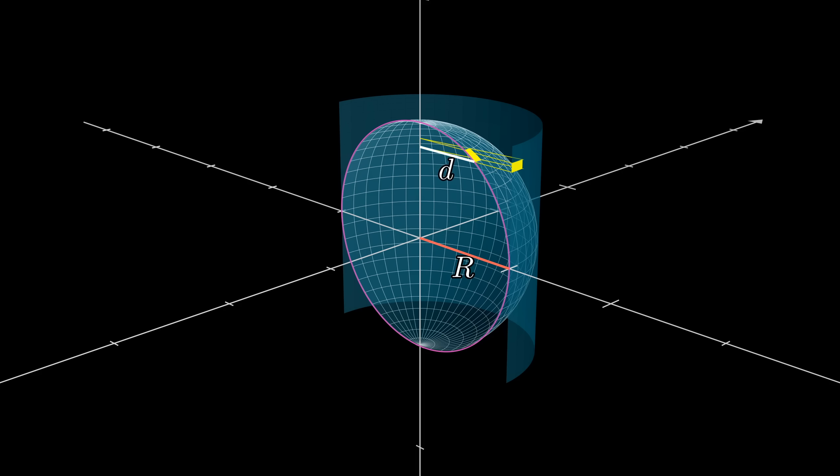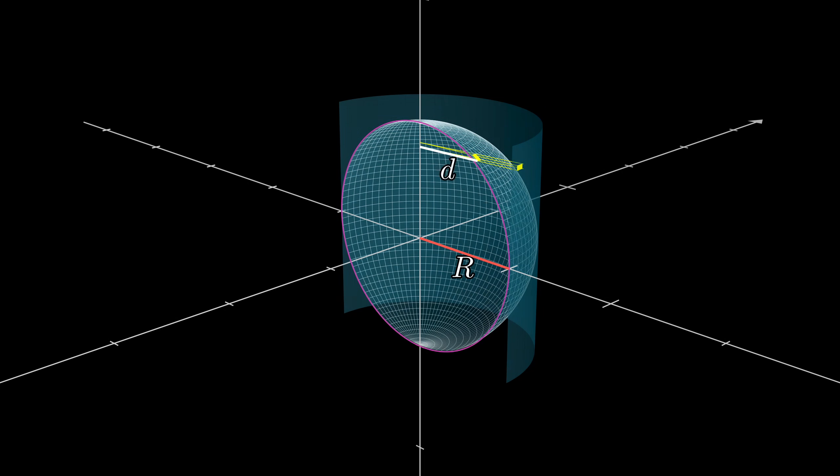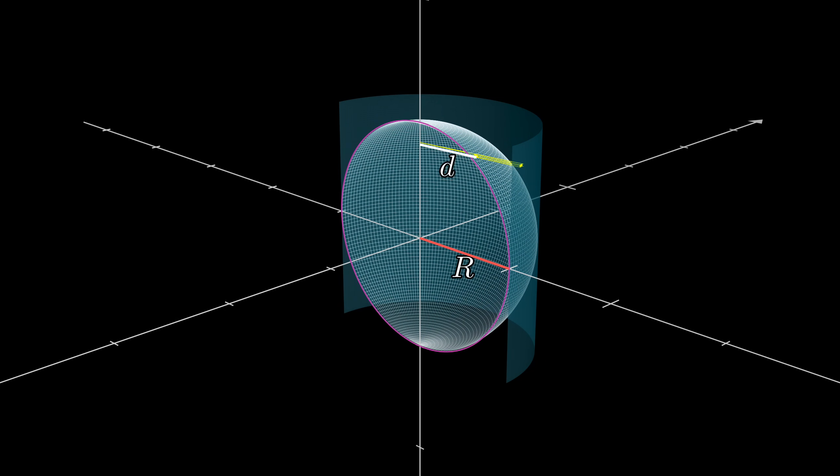You could rightfully complain that the distance d is a little ambiguous, depending on which point of that rectangle you're going from. But for tinier and tinier rectangles, that ambiguity will become negligible.